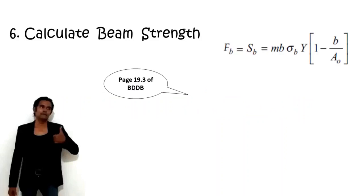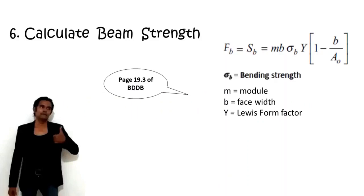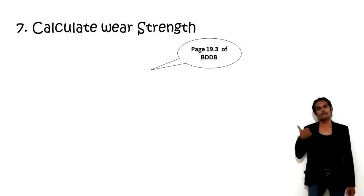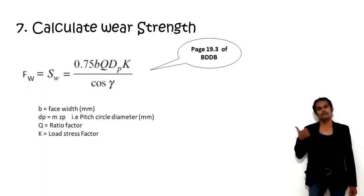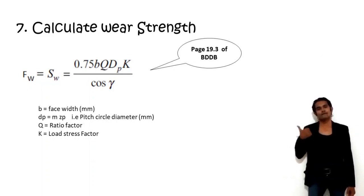Beam strength: MB = σB × Y × (1 − B/A0), where A0 is pitch cone distance, B is face width, Y is Lewis form factor, and σB is bending strength. Wear strength: 0.75 × B × Q-dash × DP × K / cos(γ), where γ is the pitch cone angle. If the pinion is weaker, use γP; if the gear is weaker, use γG.